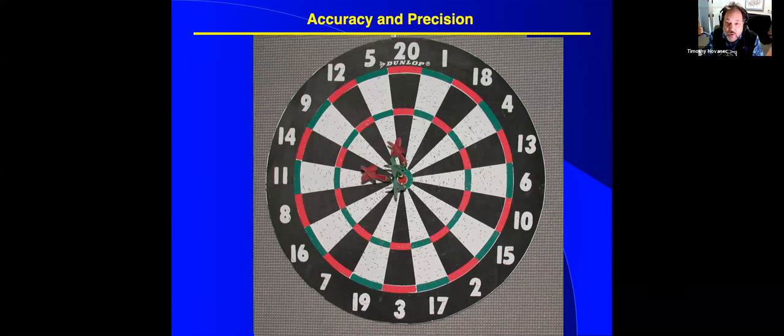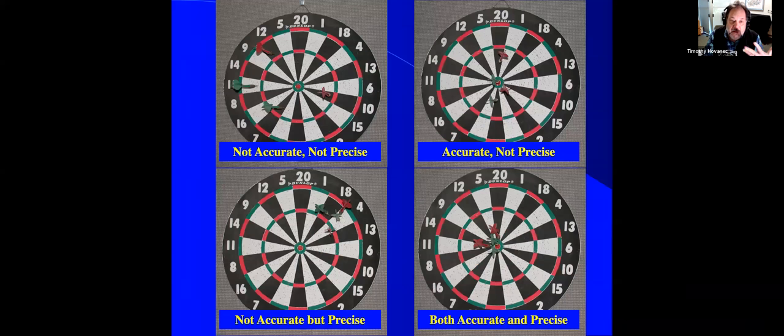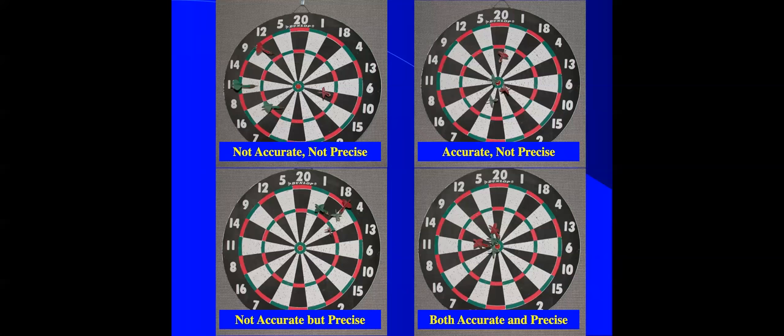And in the fourth case is what we're looking for. This is both accurate. All the darts are around the bullseye. And they're precise in that they're all close together. Meaning if you did the test multiple times, you would get the same answer. Now I will say, I'm going to interrupt you real quick.